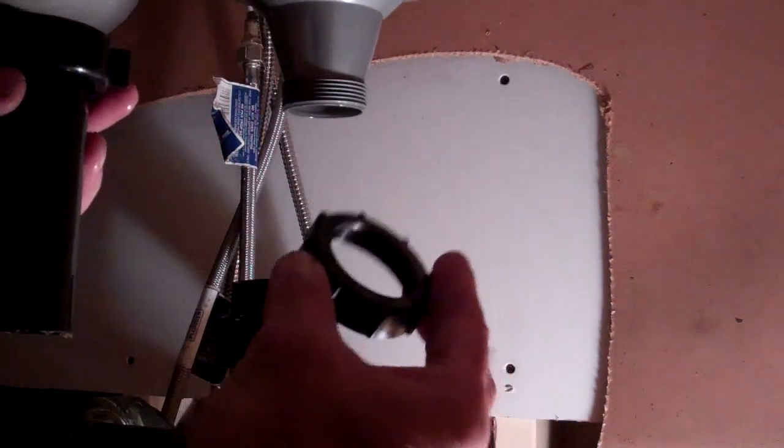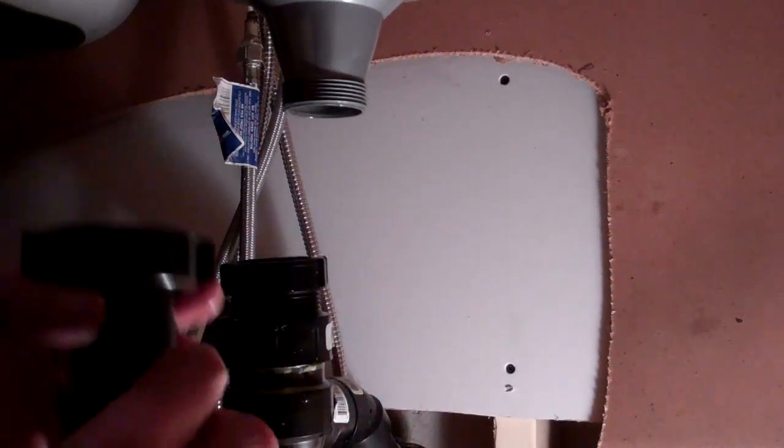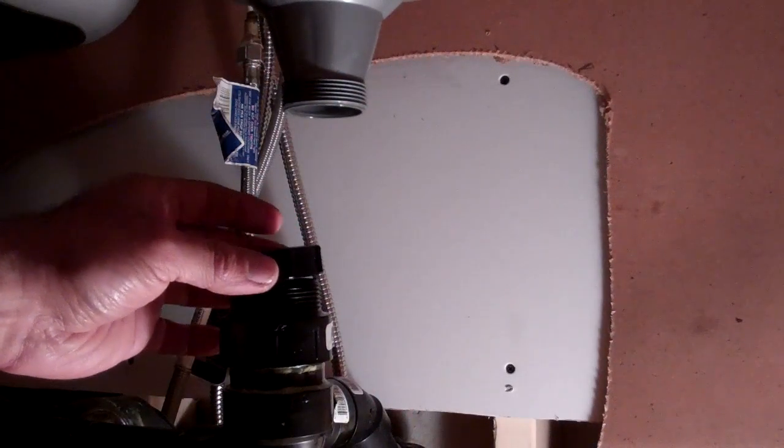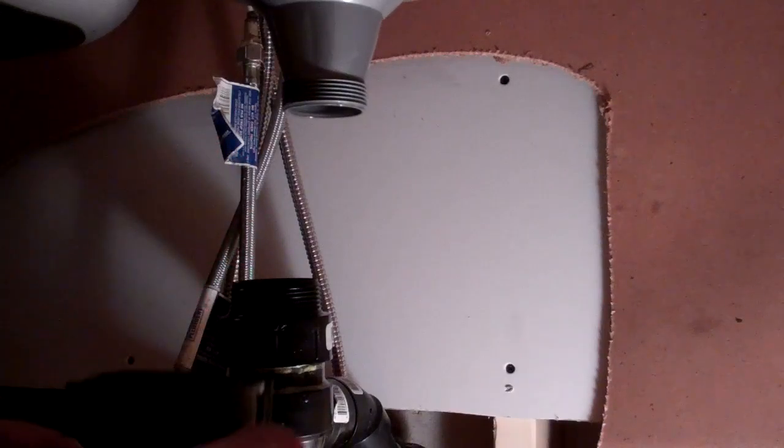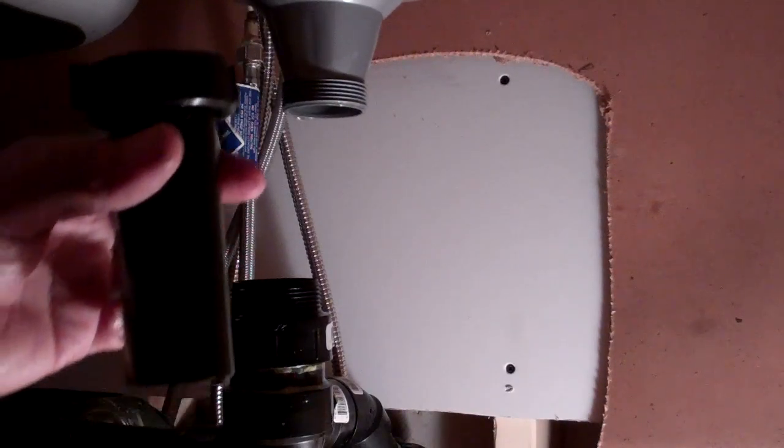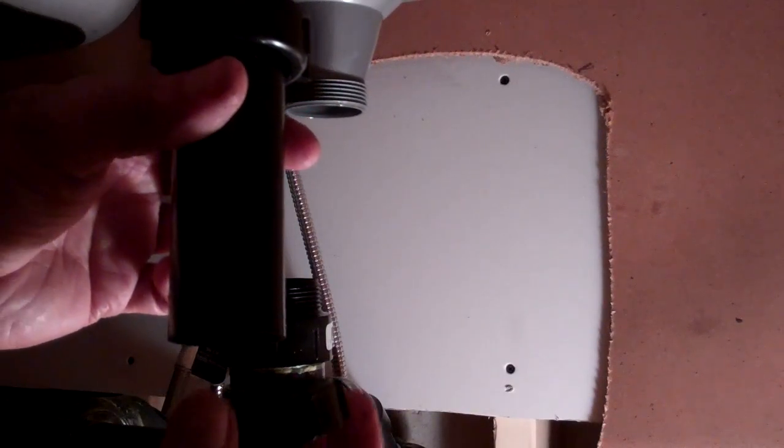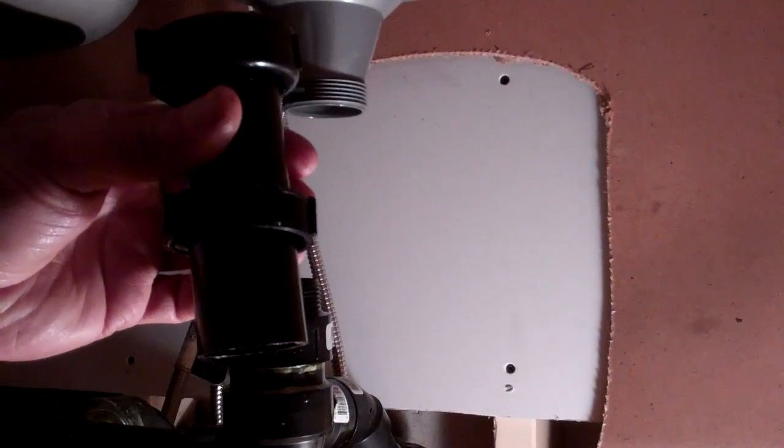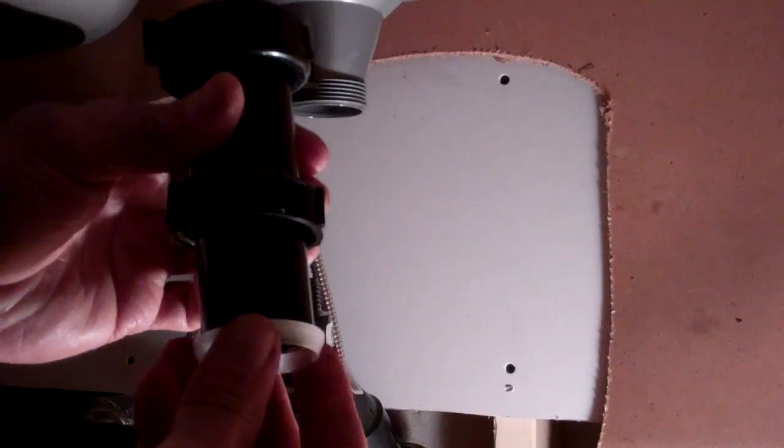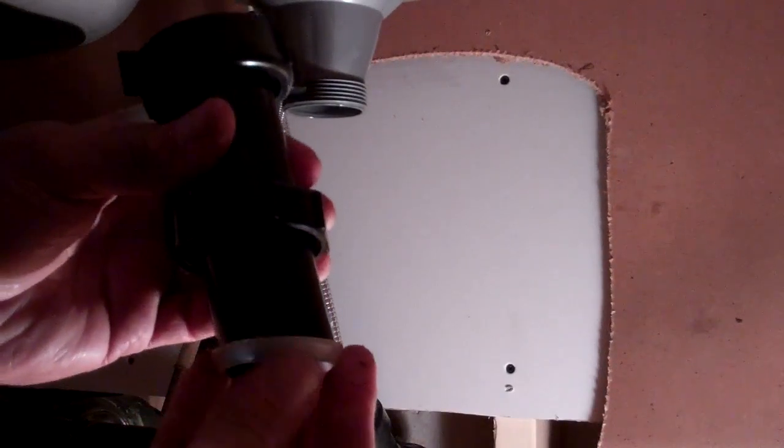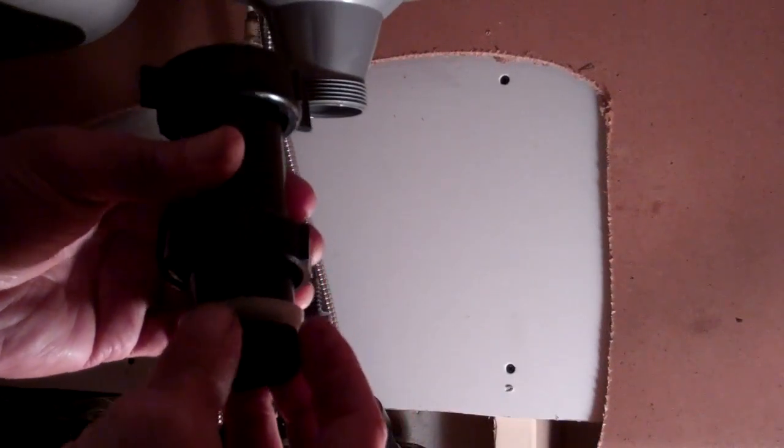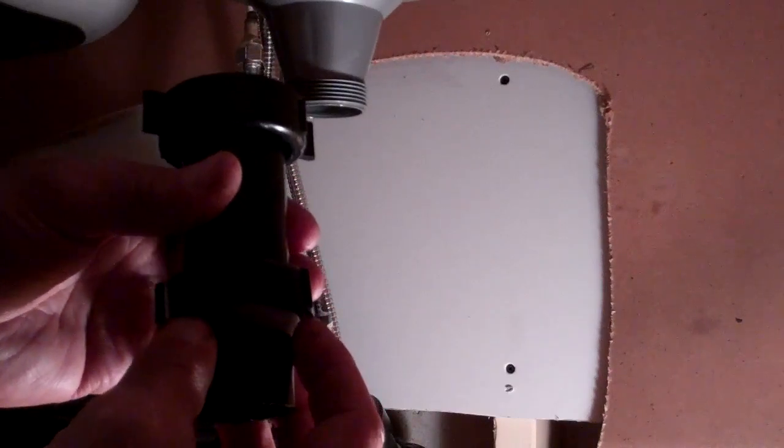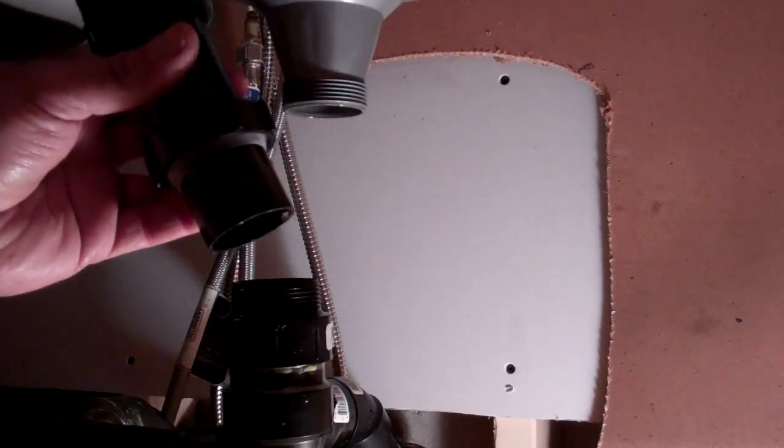Then the nut that we took off of the drain pipe right there, that is going to slip onto the bottom like so. And then there's going to be a washer up on the bottom of the tailpiece. Something along those lines.